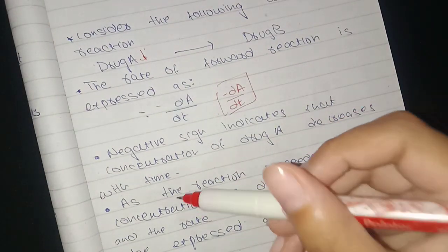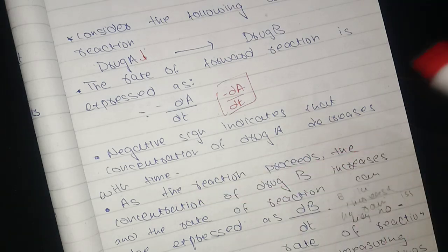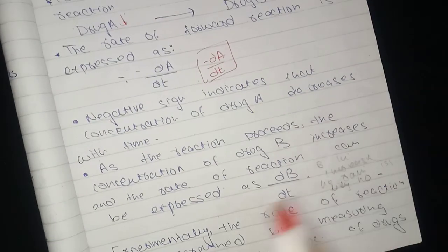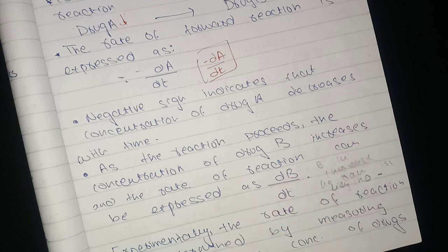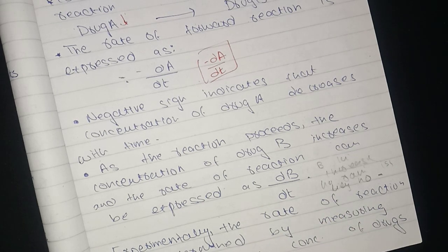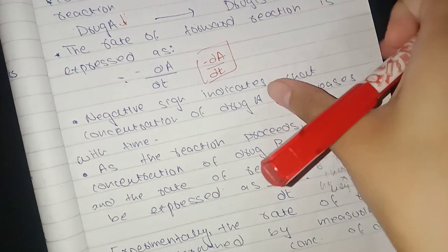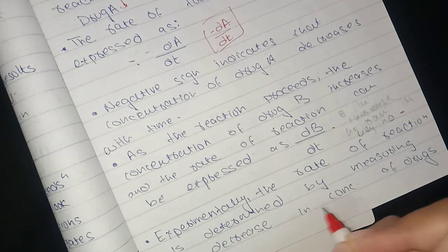Concentration of drug B increases, so there is no negative sign because it increases. The rate of reaction is determined by measuring the decrease. We will look at the concentration of the drug and see how much it has decreased.